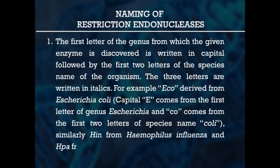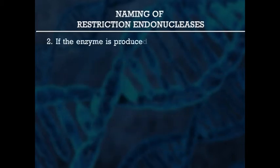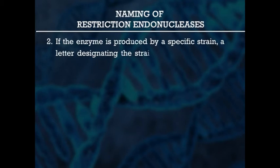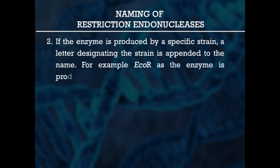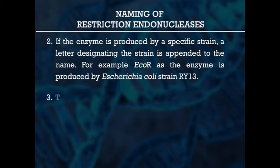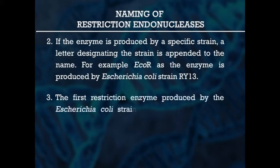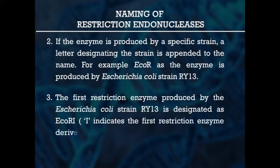Similarly, Hin is from Haemophilus influenzae and Hpa from Haemophilus parainfluenzae. Second, if the enzyme is produced by a specific strain, a letter designating the strain is appended to the name. For example, EcoR, as the enzyme is produced by Escherichia coli strain RY13. Thirdly, the first restriction enzyme produced by the Escherichia coli strain RY13 is designated as EcoRI. The numeral one indicates the first restriction enzyme derived from that particular E. coli strain.